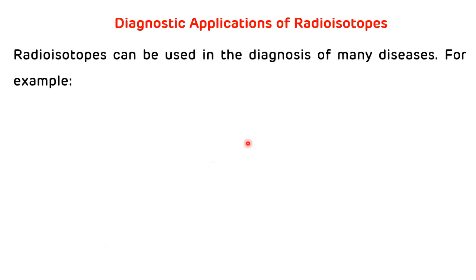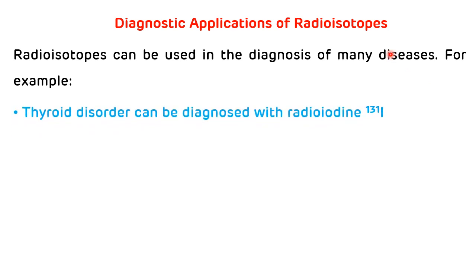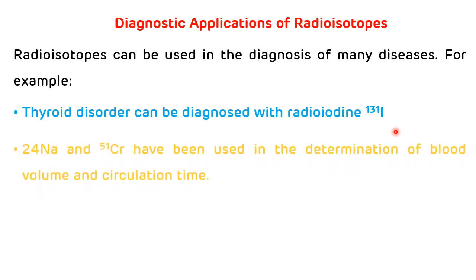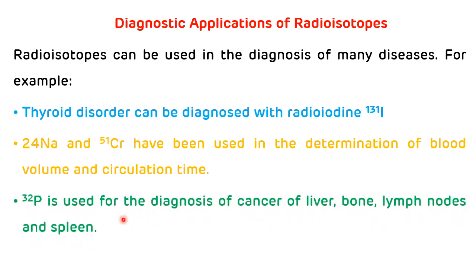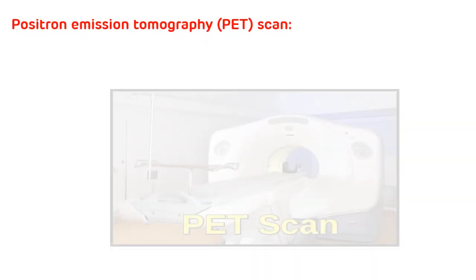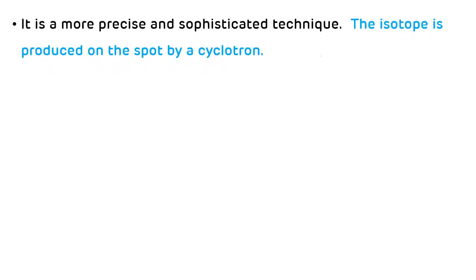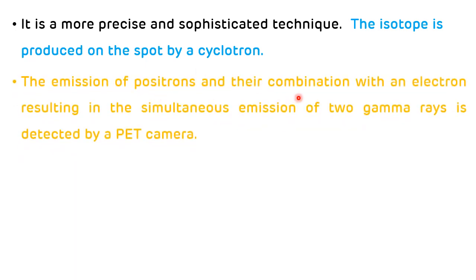Diagnostic applications of radioisotopes: thyroid disorders can be diagnosed with radioiodine. Sodium and chromium have been used in the determination of blood volume and circulation time. Phosphorus is used for diagnosis of cancer of the liver, bone, lymph nodes and spleen. Positron emission tomography — PET scan — is a more precise and sophisticated technique. The isotope is produced on the spot by a cyclotron, and the emission of positrons combining with electrons results in simultaneous emission of two gamma rays, detected by the PET camera.